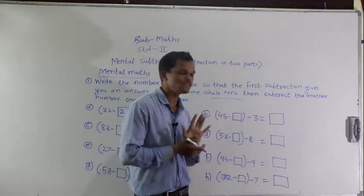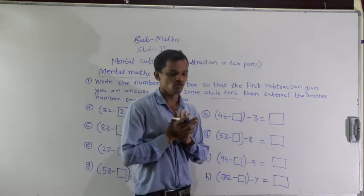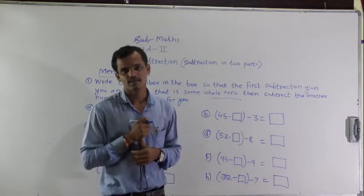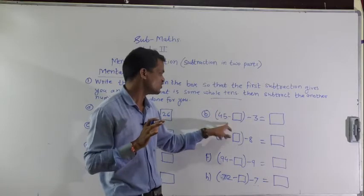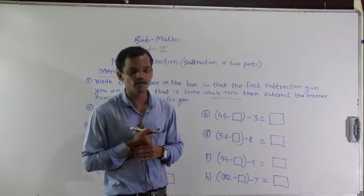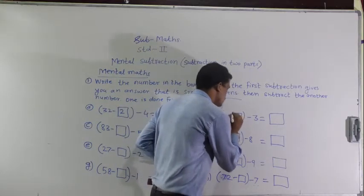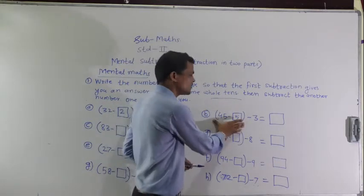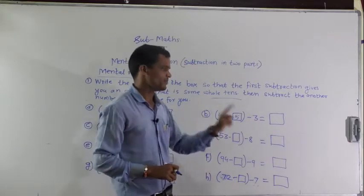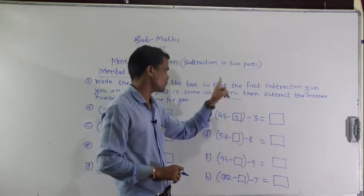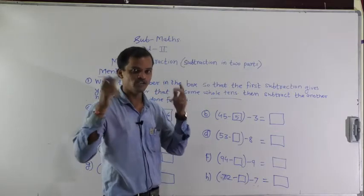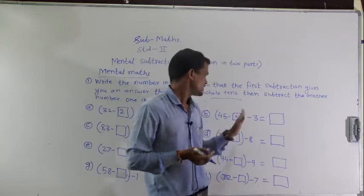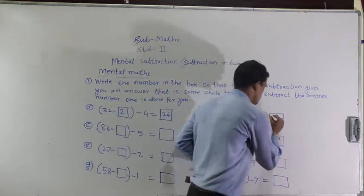45 minus blank minus 3. Which number should be subtracted from 45 so you get the whole ten? If we subtract 5 from 45, we will get 40. Then next step: subtract 3 from 40. 40 minus 3 equals 37.